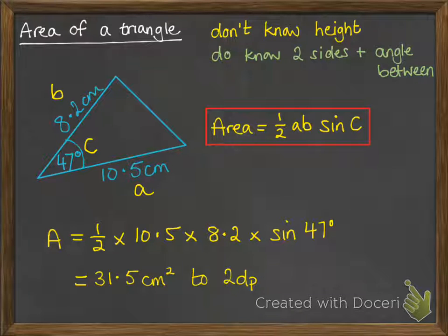Round to a suitable degree of accuracy, so here we've got two decimal places. And that's it. Nice and simple, easy way to find the area of a triangle when you don't know the base and the height.